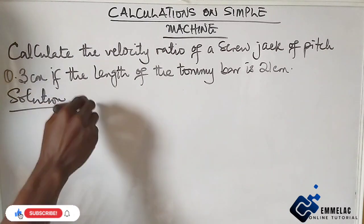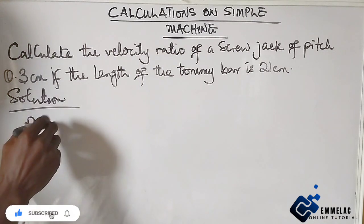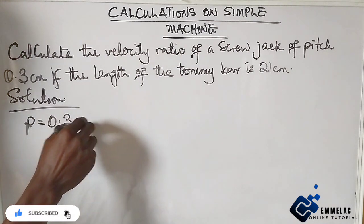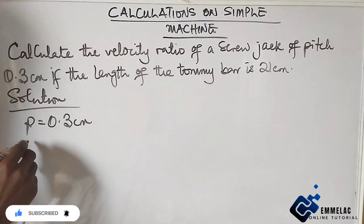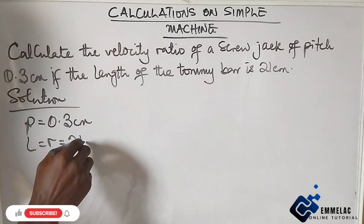I believe this should be a straightforward question. Now the pitch P is 0.3 cm and the length, which will also be the radius, is 21 cm.